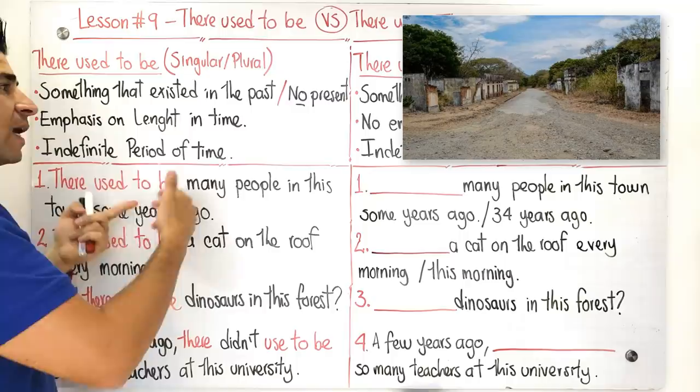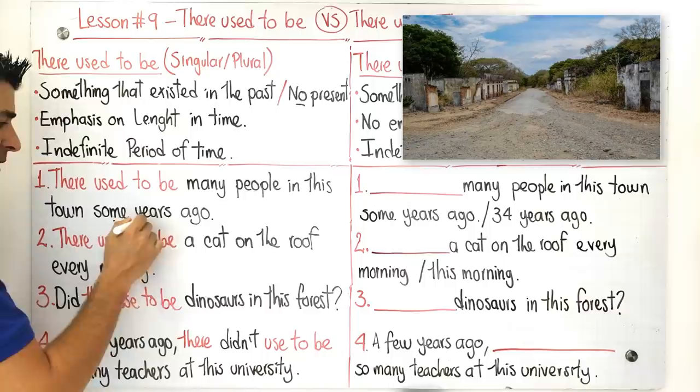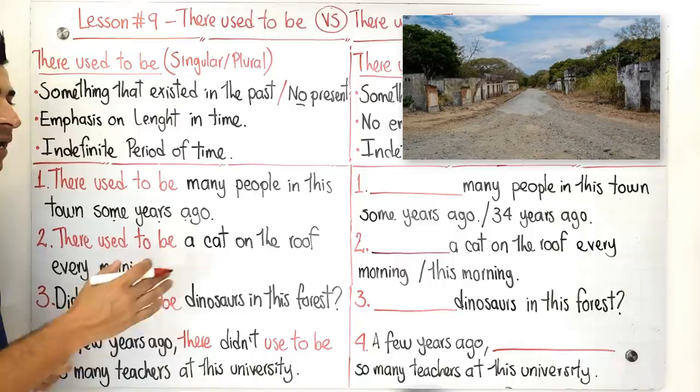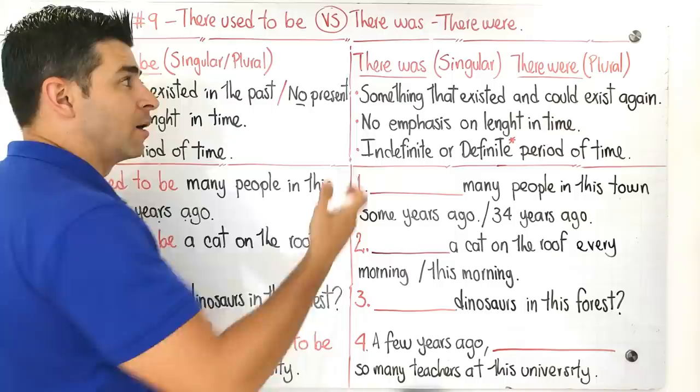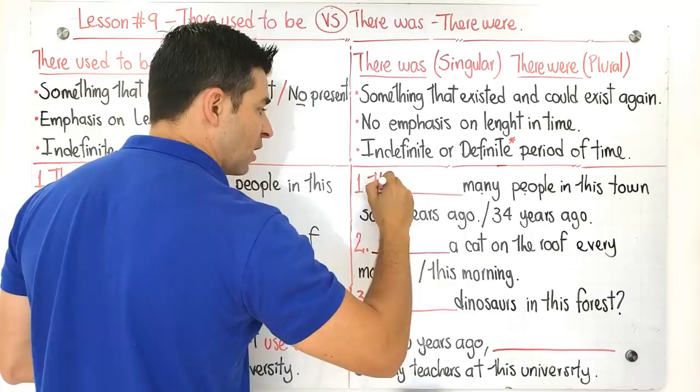And now what? We have an emphasis on the length in time, the duration of the town and the situation that happened at that time. And in here we have indefinite period of time because we're talking about some years ago. Now what do we have to do here? In this case we have to complete the sentences by using there was and there were. Which one would you choose here according to the subject that we have, which is many people? In this case, there were.